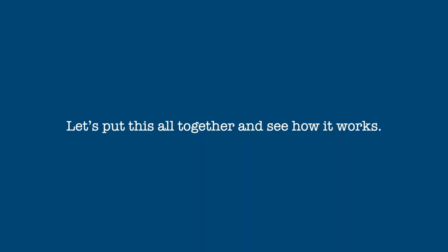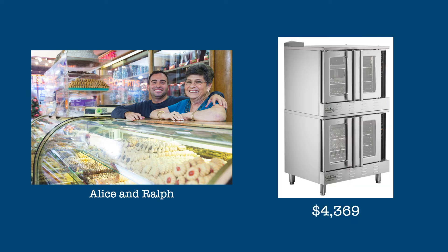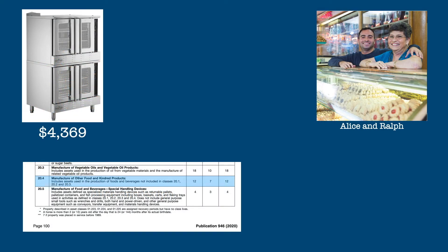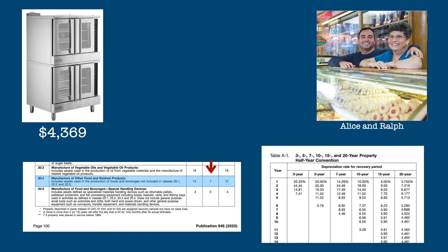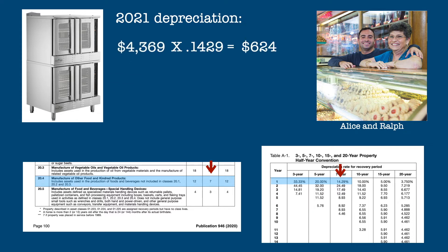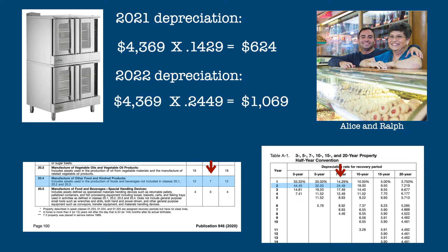Let's put all this together and see how it works. Alice and Ralph have a bakery, and in April of 2021 they purchased a new oven for $4,369, including installation. Consulting the recovery life table, they see that a useful life of equipment used in food manufacturing is 12 years, but MACRS GDS allows a recovery period of seven years. Consulting depreciation table A1, for the first year they can take 14.29% of the oven's $4,369 basis — or $624 — as a depreciation expense. In 2022, they would be able to take 24.49% of the basis, or $1,069, as a depreciation expense.